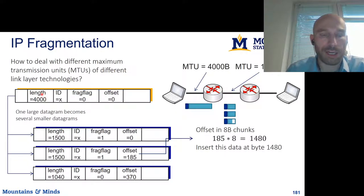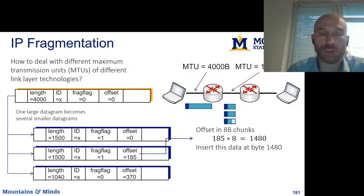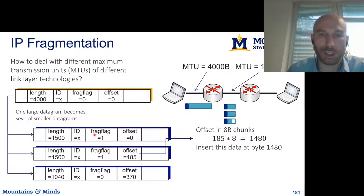We have this original packet whose length is 4000 bytes, identifier is X, fragmentation flag is 0, and offset is 0. When that packet reaches the router, the router looks at the MTU of the interface and knows it needs to fragment the packet. So it creates the first fragment with length 1500 bytes, the same ID X, fragmentation flag set to 1, and offset of 0 — meaning this packet contains the payload starting at byte 0.